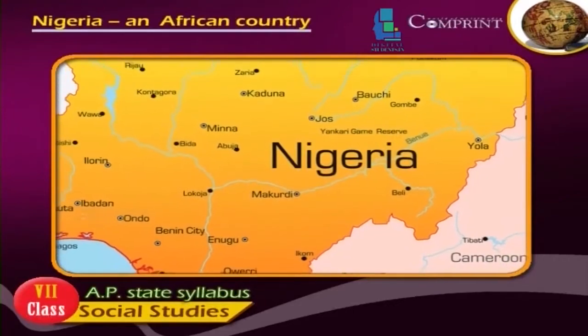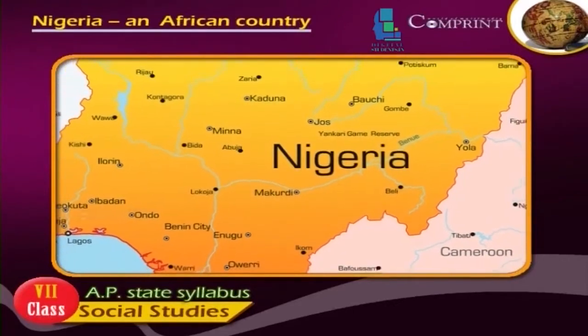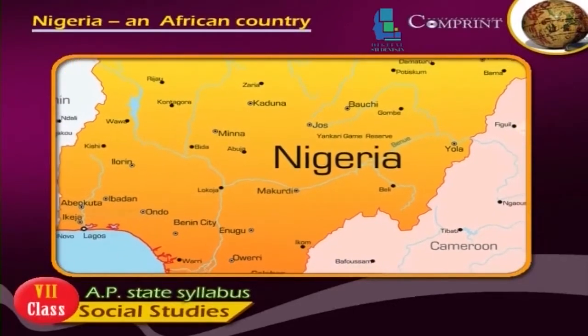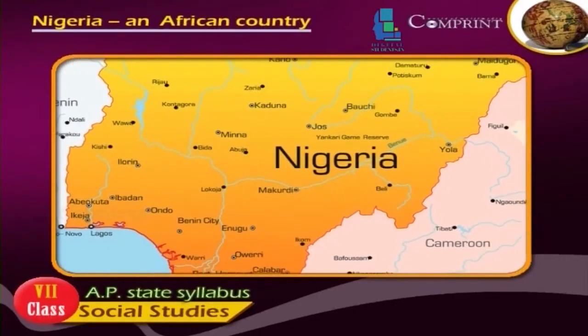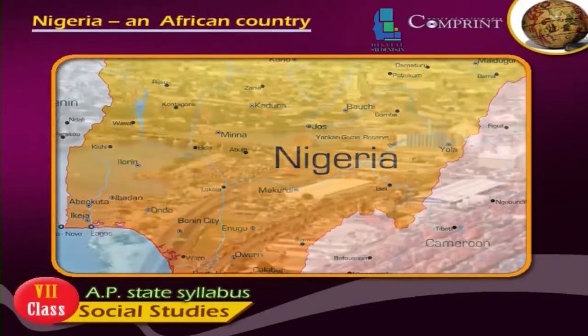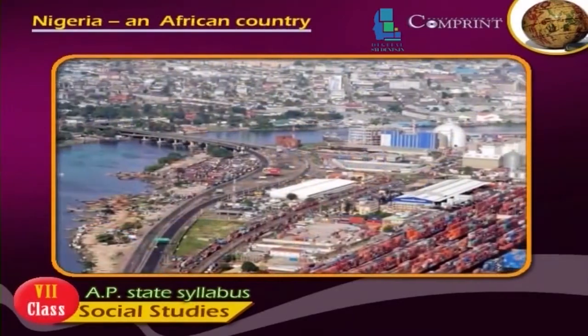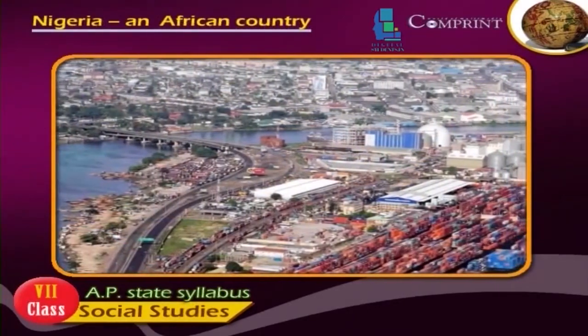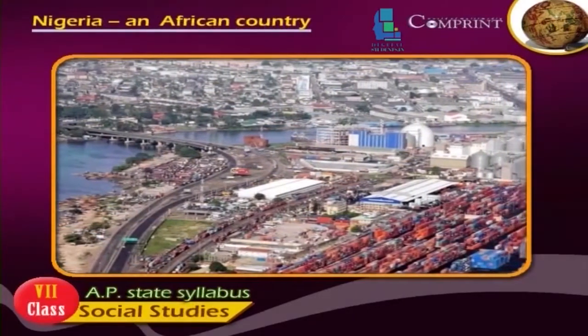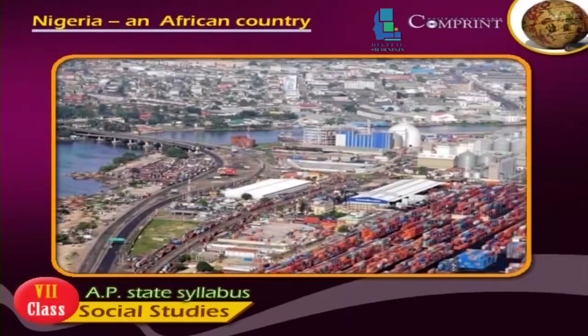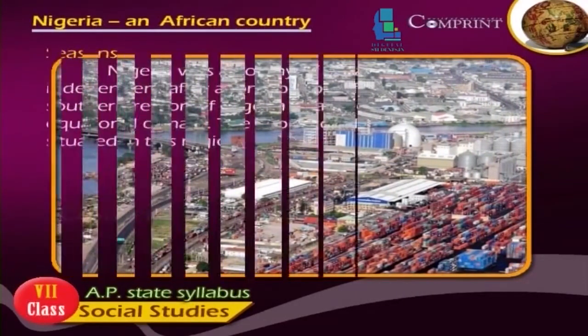The southern region of Nigeria, near the equator, has equatorial climates. The capital of Nigeria, Lagos, is situated in this region.